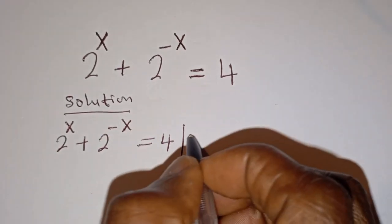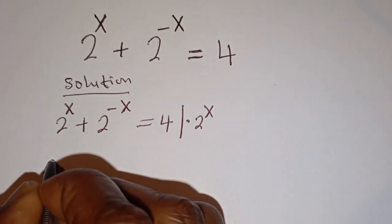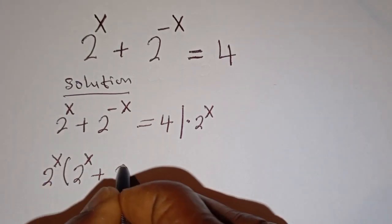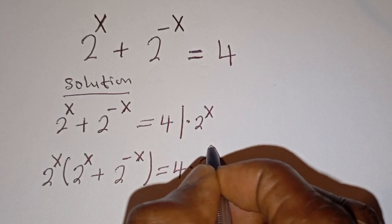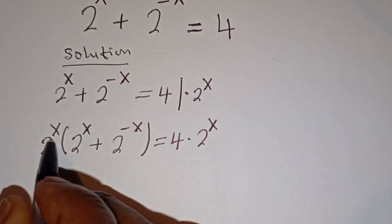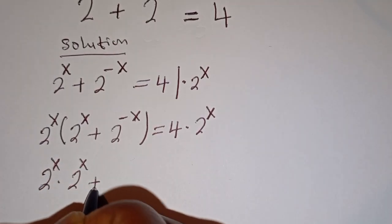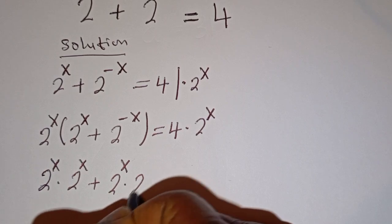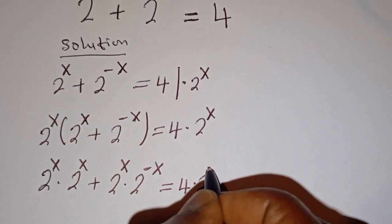Now let's multiply all through by 2 to the power of x. This gives 2 to the power of x bracket 2 to the power of x plus 2 to the power of minus x is equal to 4 multiplied by 2 to the power of x. Then here 2 to the power of x multiplied by 2 to the power of x plus 2 to the power of x multiplied by 2 to the power of minus x is equal to 4 multiplied by 2 to the power of x.